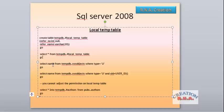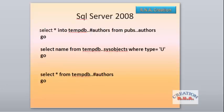This is how you actually find the name of the tempdb objects: select name from tempdb..sysobjects where type equals 'U'. 'U' stands for user-defined tables. These are the SQL statements we will examine in SQL Server itself — these are for the local temp tables in the tempdb.